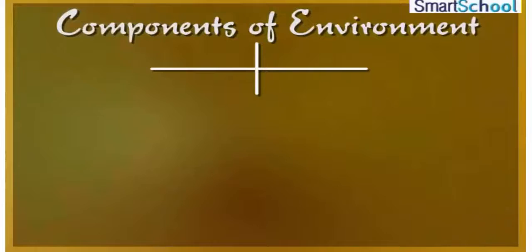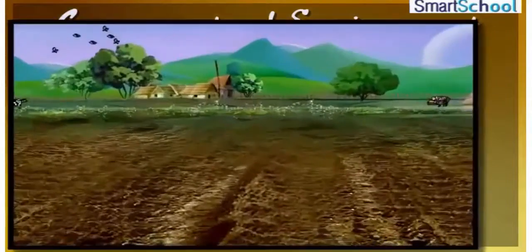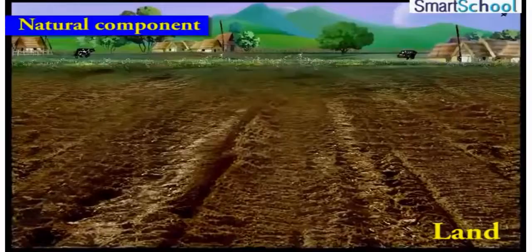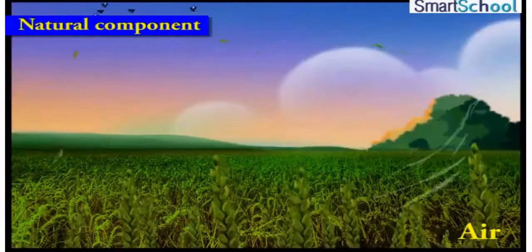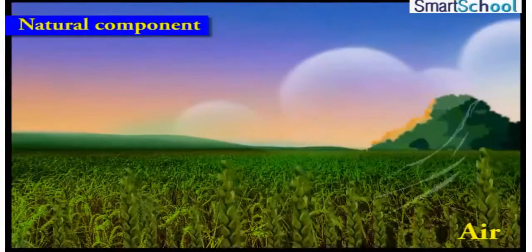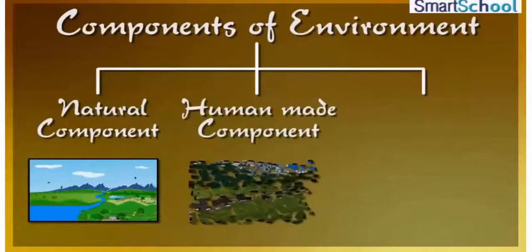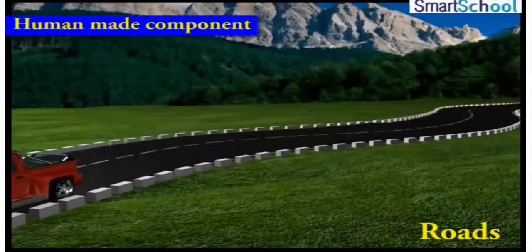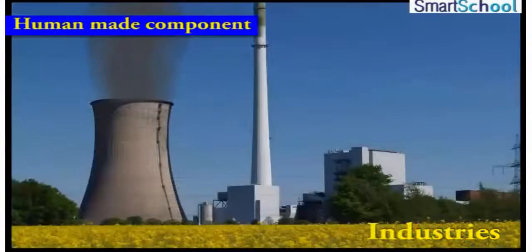Components of Environment. If we look at the environment, it is composed of three different components. Natural components like land, air, and biosphere. Human-made components like roads, bridges, industries, etc.